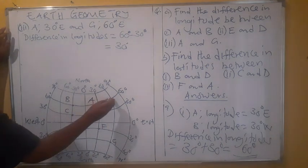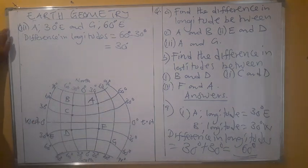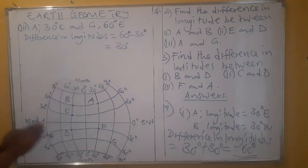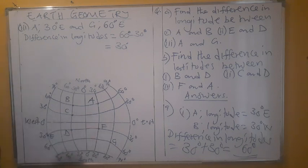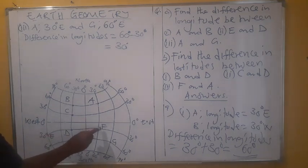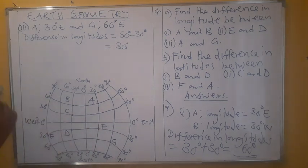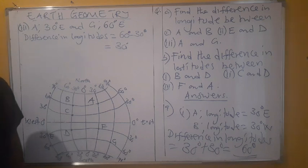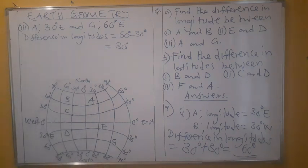So the difference in longitude between A and G is 30 degrees — you subtract the smaller from the larger because they are on the same side. For example, looking at the difference in longitude between F and D, they are on different sides — 30 and 30 — so you add: 90 plus 30 gives 120. Similarly for A and F, since they are on different sides, you add.